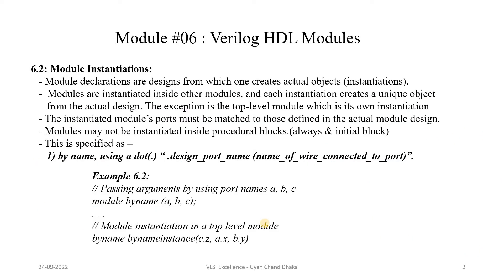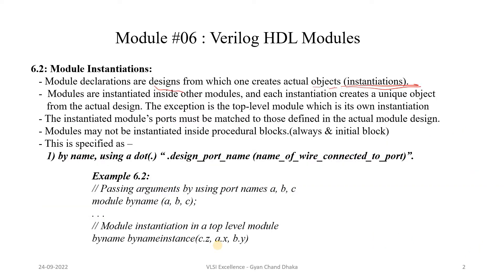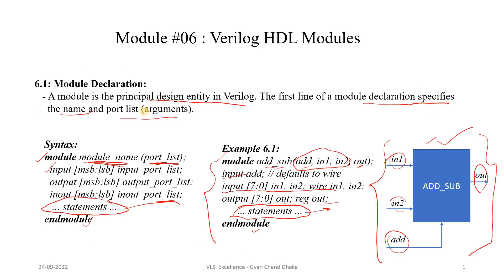Now let's see how we can instantiate this module at a top-level module. Module declarations are designs from which one creates actual objects — that is instantiation. This declaration of a module is the design, and we instantiate it at a top level where it can be treated as an object. Modules are instantiated inside other modules, and each instantiation creates a unique object from the actual design. However many times we instantiate a module, that many objects of that design are created.